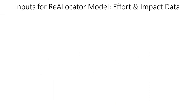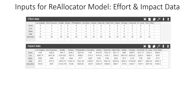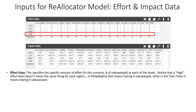Next, we have to input our effort and impact data into InGenius. This is inputted as two separate tables that must correspond in terms of number of rows, row labels, number of columns, and column labels. Focusing on the high row: the base amount of effort represents the same number of salespeople from the base scenario. We're imagining adding an additional salesperson — an increment of one — to each one of the markets.